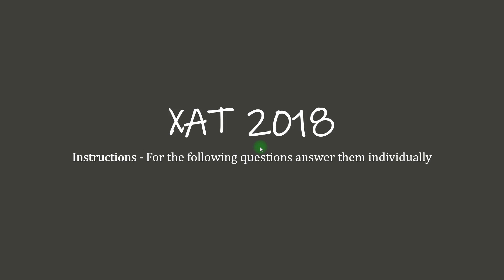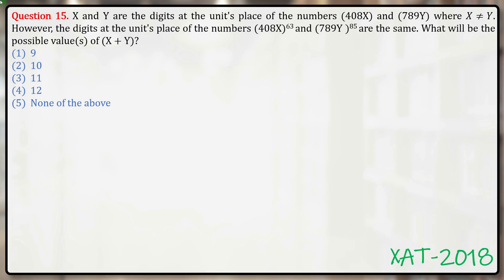Let's get on with this question of XAT 2018. x and y are the digits at the units place of the numbers 408x and 789y, where x is not equal to y. However, the digits at the units place of 408x raised to the power 63 and 789y raised to the power 85 are the same. What will be the possible value or values of x plus y?